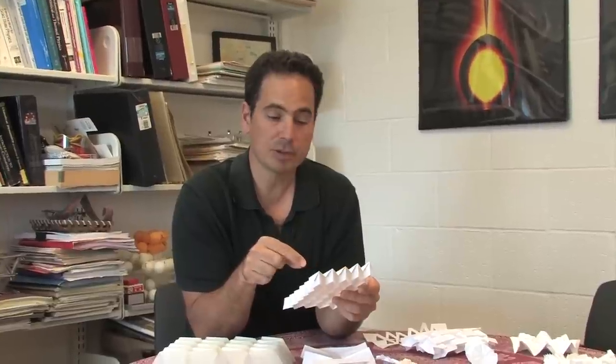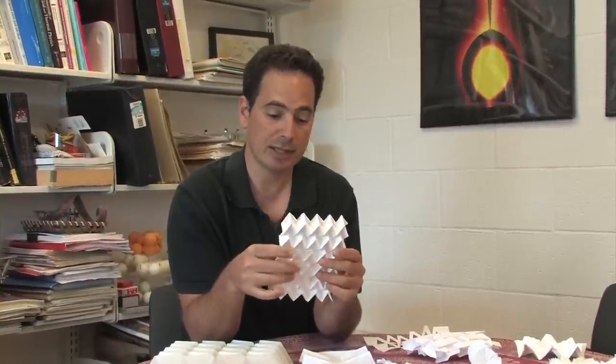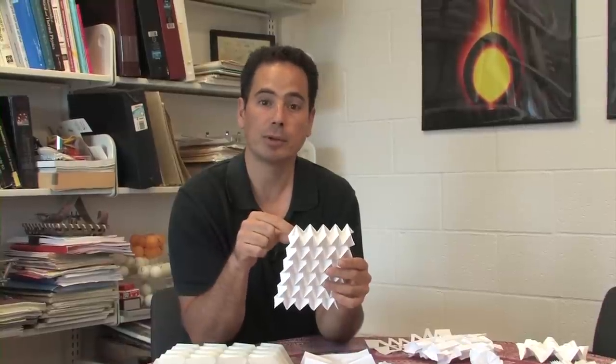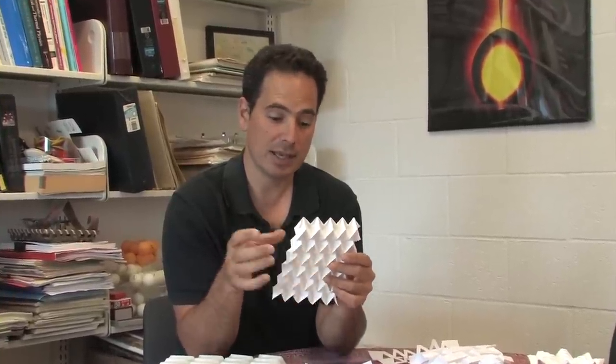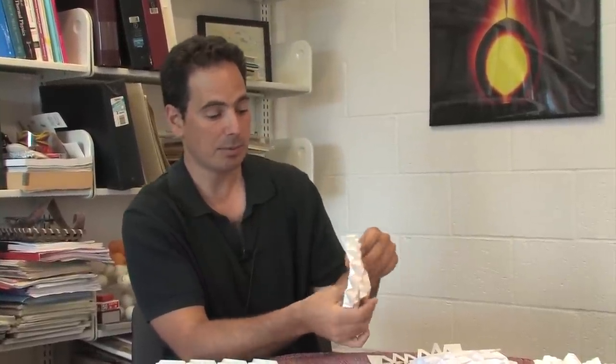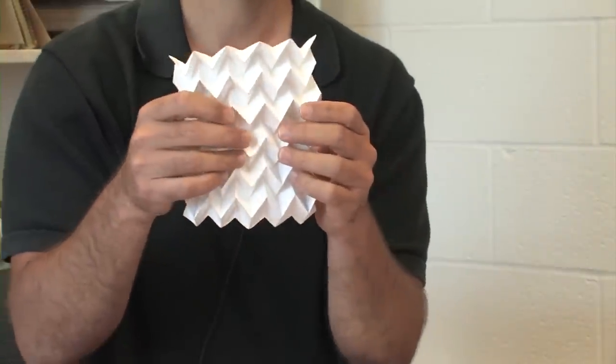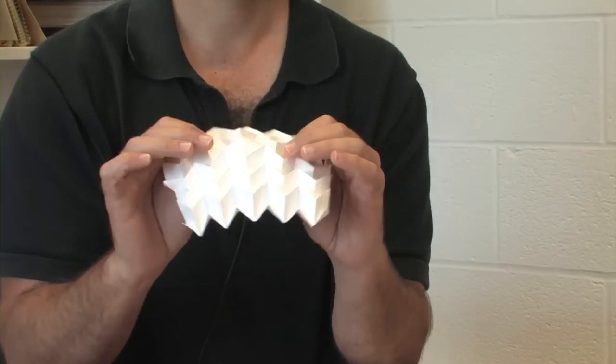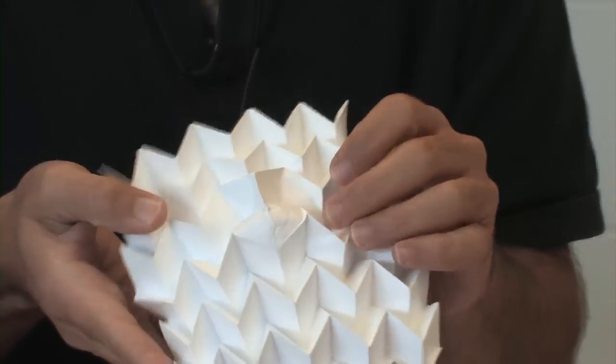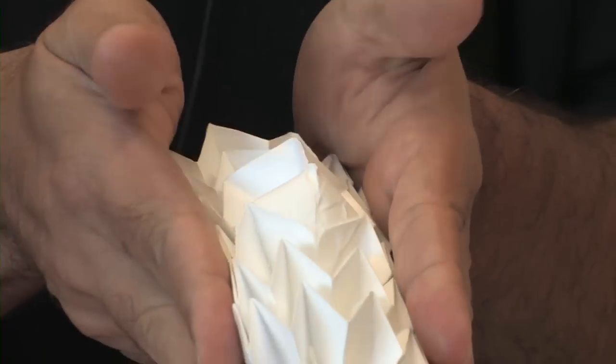The paper that we wrote also highlights another feature, which is that you can program this Miura-Ori's stiffness. And the way I do that is by introducing pop-through defects. So I take one of these vertices and I pop it through. You can kind of see that on this side here. The sheet is no longer quite as flat as it used to be.